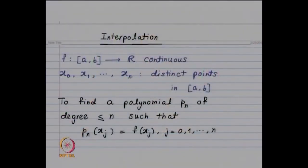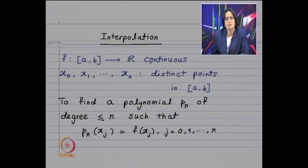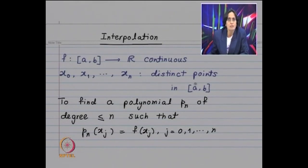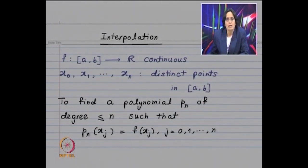Our function f is defined on closed interval [a, b] and takes real values. It is not necessary that it should be continuous — just defined on interval [a, b] will do — but let us assume f to be continuous. Suppose you have got x_0, x_1, ..., x_n, which are distinct points in interval [a, b]. Then the problem is to find a polynomial p_n of degree less than or equal to n, such that p_n agrees with the given function f at these n+1 points. We are going to show existence and uniqueness of such a polynomial.